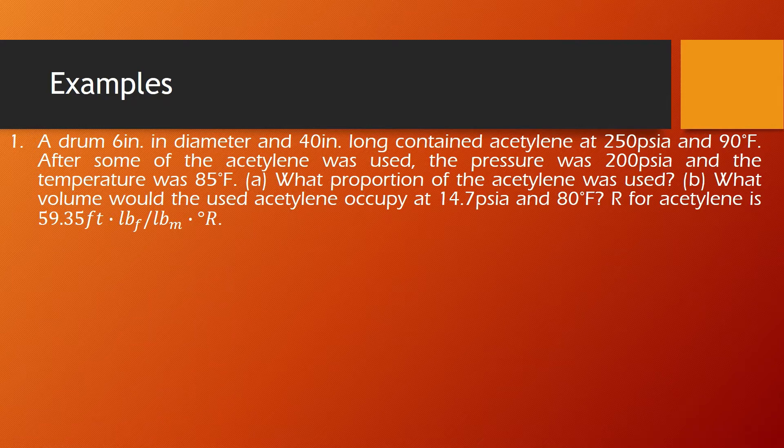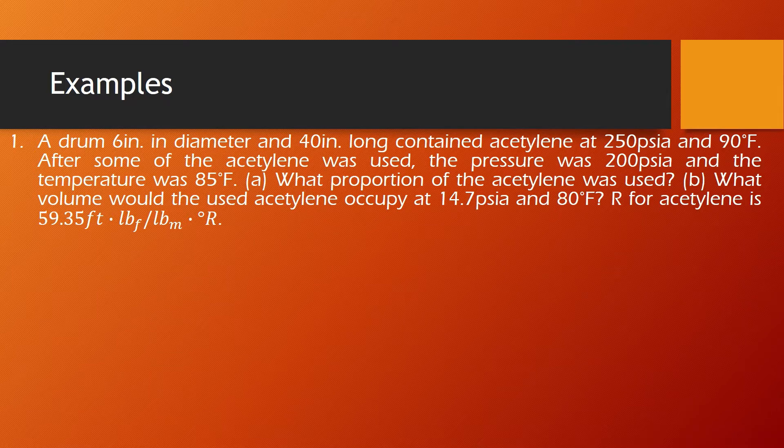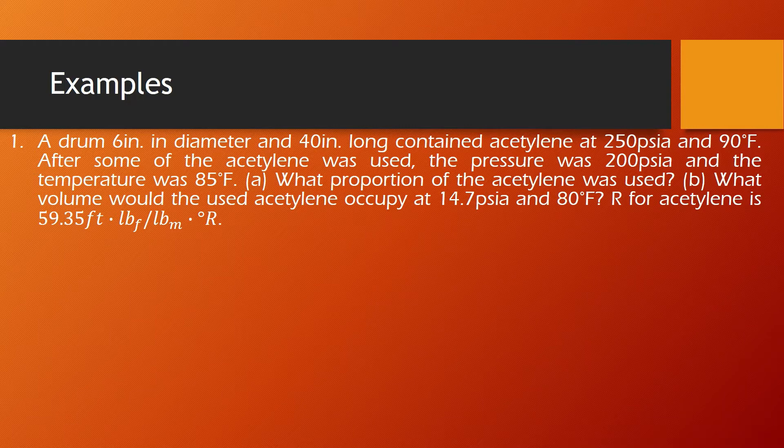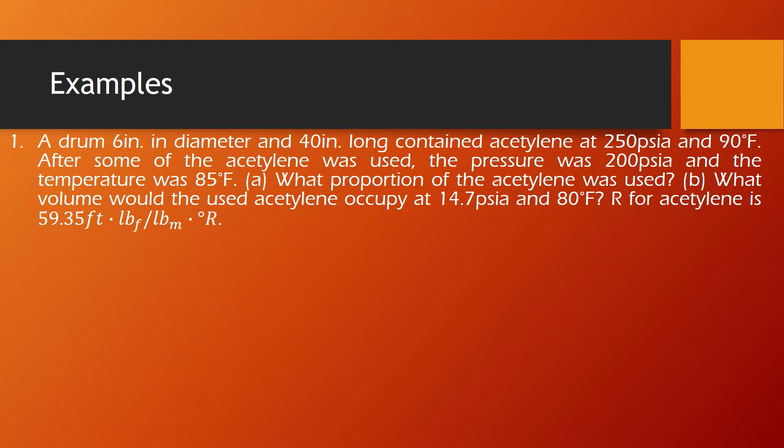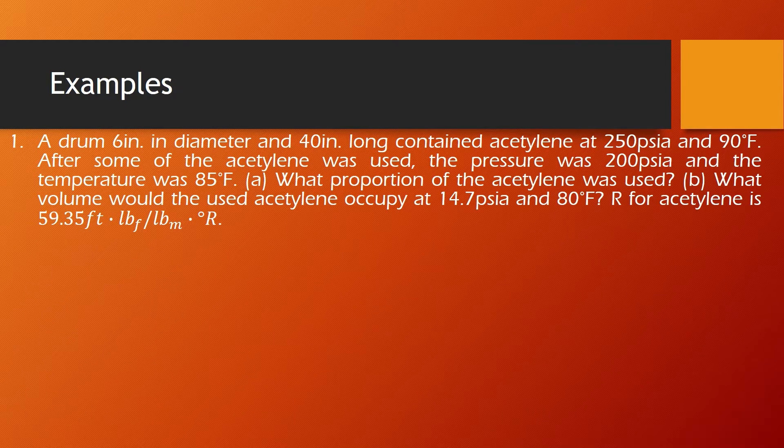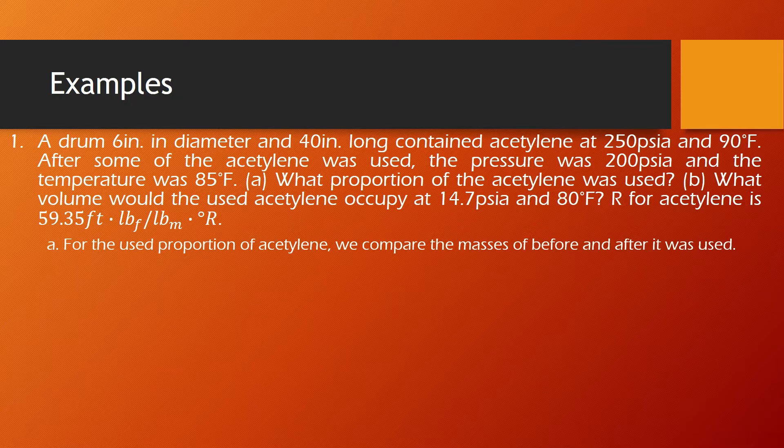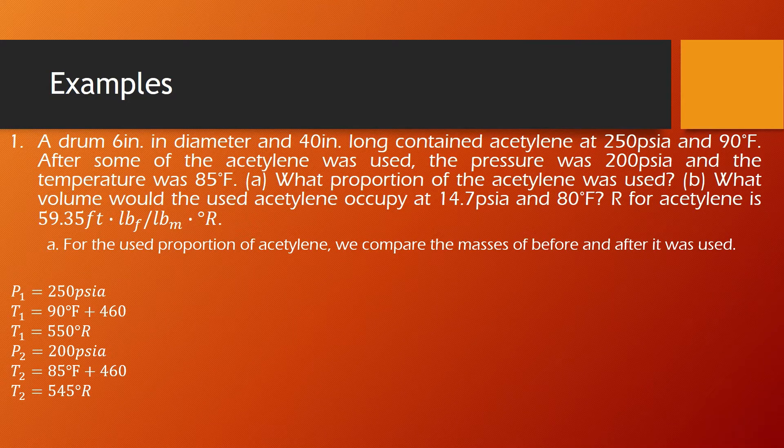the pressure was 200 psia and the temperature was 85 degrees Fahrenheit. What proportion of the acetylene was used? And then what volume would the used acetylene occupy at 14.7 psia and 80 degrees Fahrenheit? So for letter A, we are going to solve for the masses of the acetylene.